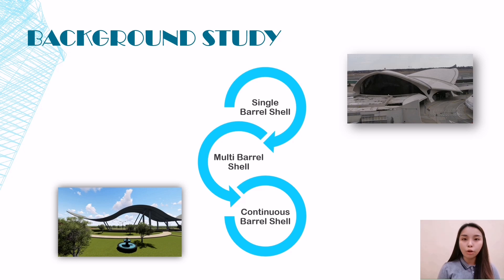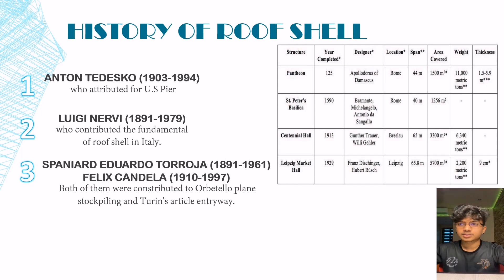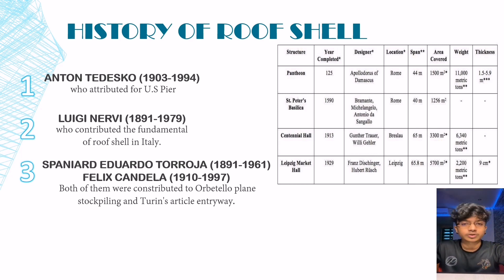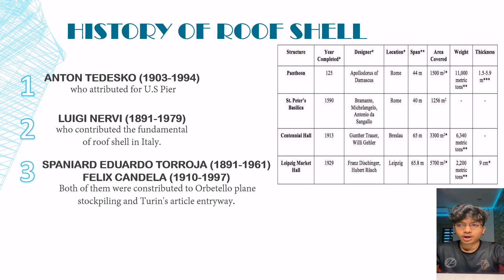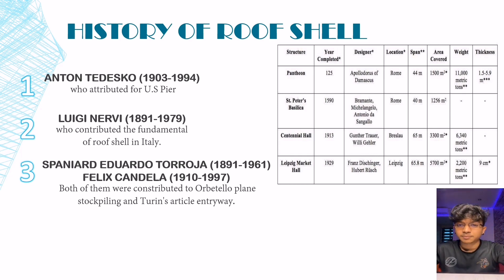And finally, we will show a width sheet of roof shell. Good morning. I am here to talk about the history of roof shell. There were four main contributors. First of all, there was Anton Tedesco, who contributed to the US pier. In Italy, there was Luigi Nervi, who contributed to the fundamental roof shell structures in Italy. Next up will be Eduardo Torroja and his disciple Felix Candela. These people contributed to roof shell and dome structures in Spain, such as the Orbetaló plain stockpiling and Turin's article entryway.